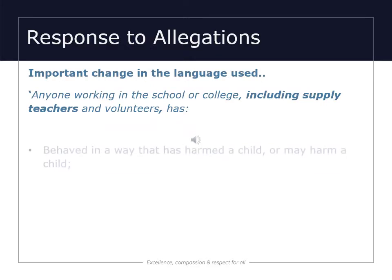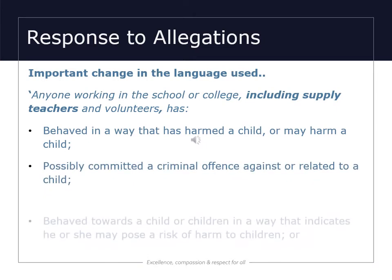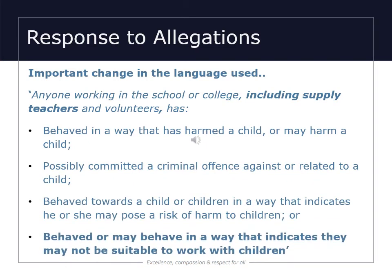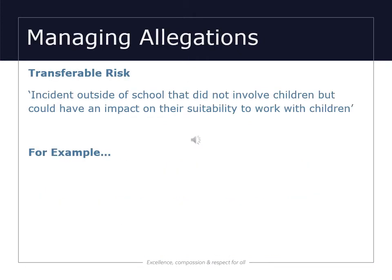A key change is the response to allegations against a member of staff, with important changes in the language used. Anyone working in the school or college — including supply teachers and volunteers — who has behaved in a way that has harmed a child or may harm a child, possibly committed a criminal offence against or related to a child, behaved towards a child in a way that indicates they may pose a risk of harm, or may behave in a way that indicates they may not be suitable to work with children. The management of allegations now also includes transferable risk — an incident outside of school that did not involve children but could have an impact on suitability to work with children, for example an incident of domestic abuse.